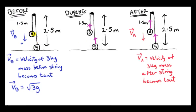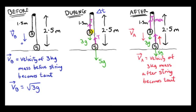To understand what's going on, we break the problem into three stages: immediately before the string becomes taut (where we know the velocity), during the string becoming taut — an extremely small time interval delta T — and immediately after, when the 3 kg mass has velocity VA. The string tension T starts at zero and rises to some maximum T_max, all within this extremely small time interval delta T.